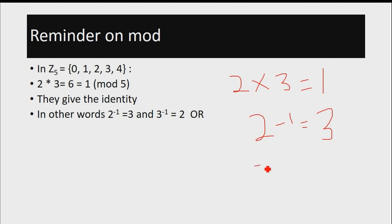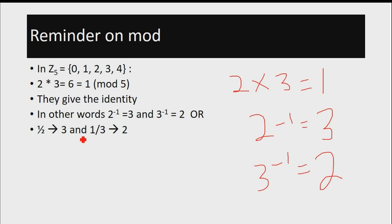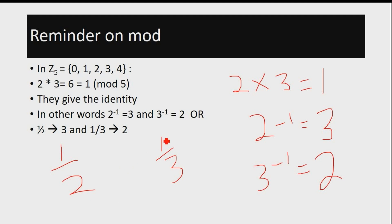Likewise, since we have to multiply 2 to 3 to arrive at 1, the inverse of 3 is also equal to 2. Another notation for the inverse is 1 over 2 or 1 over 3 — so the inverse of 2 can also be written as 1 over 2, and the inverse of 3 as 1 over 3. In this video, I have adopted the notation of using negative 1 as a superscript.